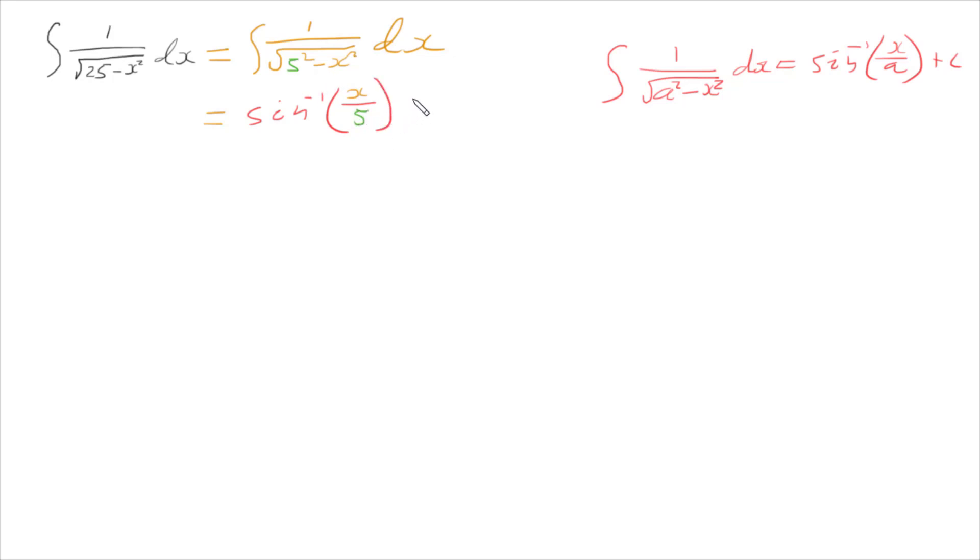All we need to do is remember to put in our plus c. That's it. So the integral of 1 over the square root of 25 minus x squared dx is the inverse sine of x over 5 plus c.